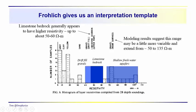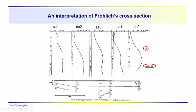The sounding data are plotted on the AB over 2, or L over 2 scale—a log scale. The interpretations are plotted on a linear scale, so there's a mixture of scales here. Down here we have a cross-section which represents the interpretation.